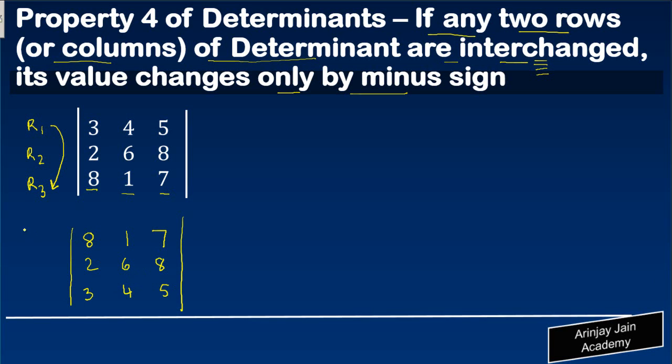You have basically interchanged row 1 with row 3. If any two rows or columns of a determinant are interchanged—or for example, you could have actually interchanged columns whereby column 1 could have been interchanged with column 3.